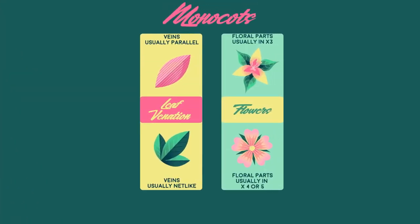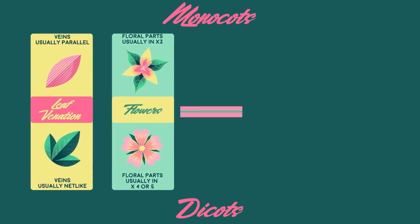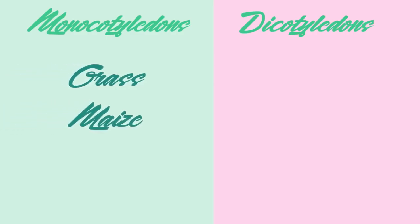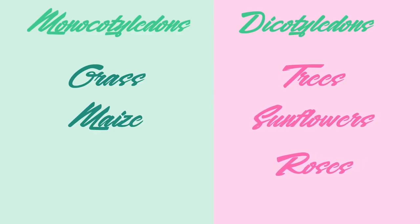Some observable differences are that monocots have parallel veins and petals in groups of three, whereas dicots have net-like veins and petals in groups of four or five. There are other differences as well, but we don't need to worry too much about these at this stage. Grass and maize are examples of monocots, whereas trees, sunflowers, and roses are examples of dicots.